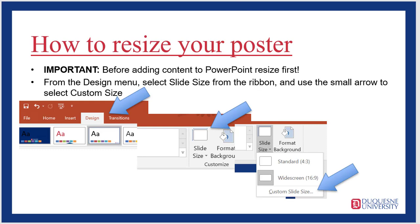So how do you go about doing this? In PowerPoint, you can go to the Design menu, which is a tab at the top of the screen. And then from the ribbon, select Slide Size. There's a drop-down menu that will appear. You may also have to click the little arrow next to the words Slide Size, and you can select Custom Slide Size.